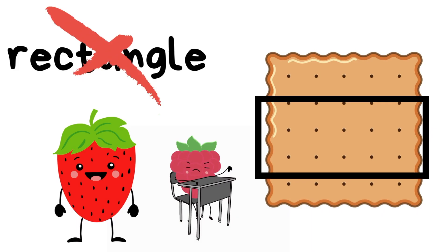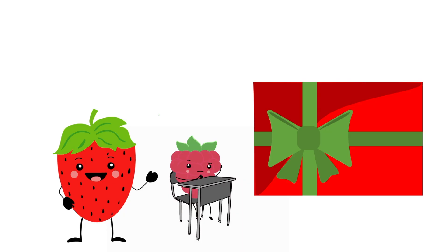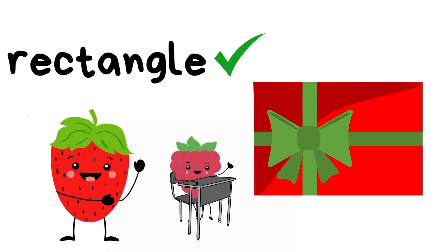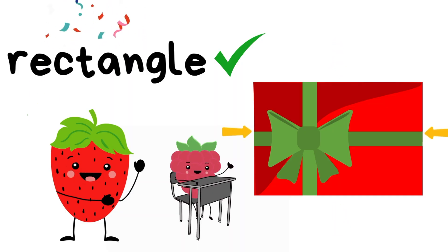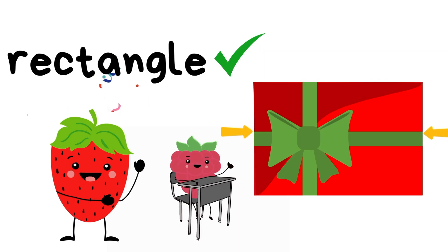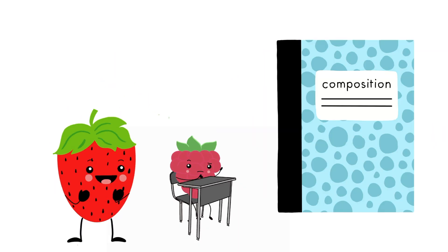What about this object — is this a rectangle? Does it have two short sides and two long sides? Show me your thumbs up, because this is a rectangle! It has two long sides and it has two short sides, so it's a rectangle. Is this object a rectangle? Does it have four sides that aren't the same size?